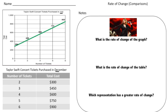This problem involves Taylor Swift and tickets for a concert. In the line graph, notice that the tickets were purchased in July — I've underlined the word July — and then down here the tickets were purchased in December. To figure out the rate of change we need to come up with two points, so I'm going to use this point right here and also this point right here.